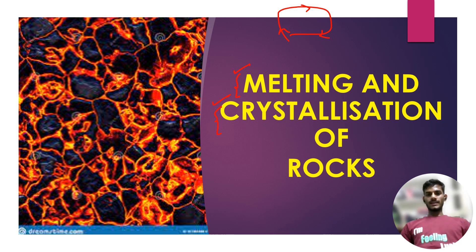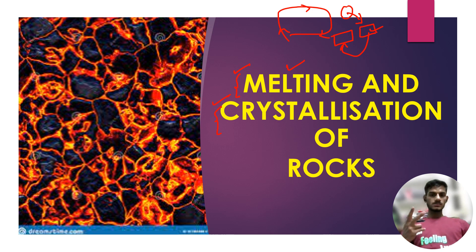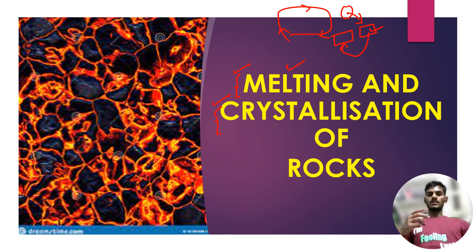When a metamorphic rock is at very high temperature, it is going to be melted and produce a melt that is known as magma or lava. When this lava comes to the surface or near to the surface, it crystallizes into solid crystals — that is known as crystallization. We will see the two models of melting and crystallization, and also how the associated numericals can be solved with the help of these models.